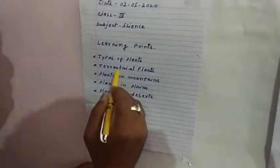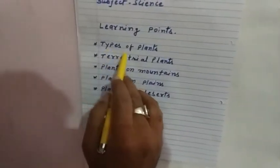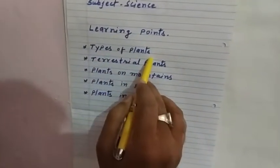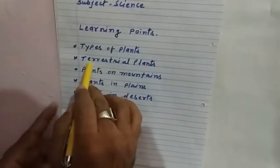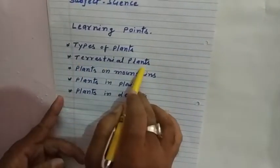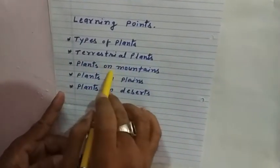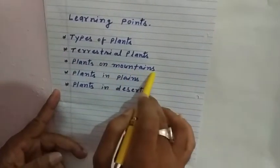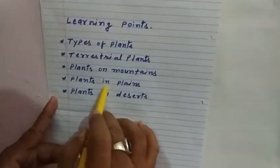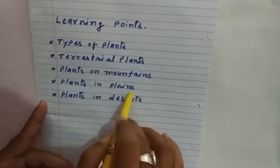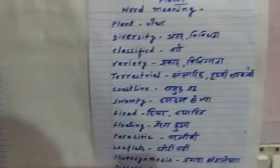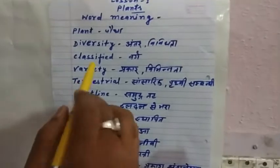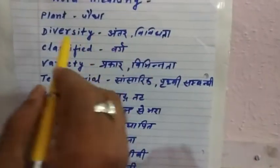Types of plants — terrestrial plants, plants on mountains, plants in plains, plants in desert. Now some word meanings.